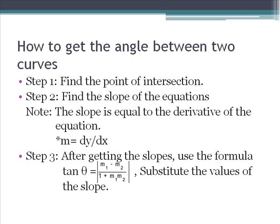How to get the angle between two curves: Step 1, find the point of intersection — that is the point where the two curves meet each other. Step 2, find the slope of the equation; note the slope equals the derivative of the equation, M equals dy/dx. Step 3, after getting the slope, use the formula tangent theta equals M sub 1 minus M sub 2 all over 1 plus M sub 1 times M sub 2, and substitute the values of the slope.